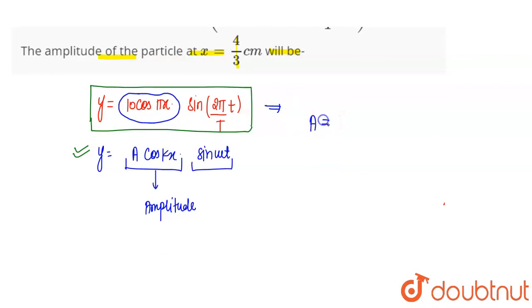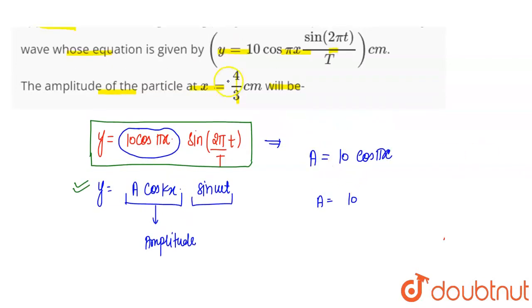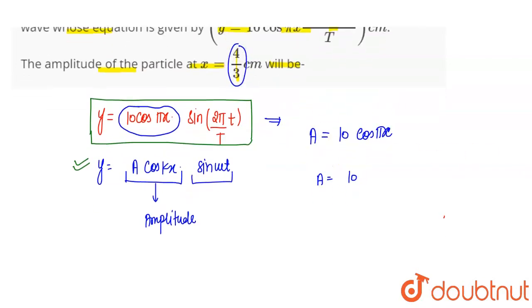The given equation's amplitude has value 10 cos πx. This is our amplitude. Now you can see we have to find the amplitude at x equals 4/3 cm.